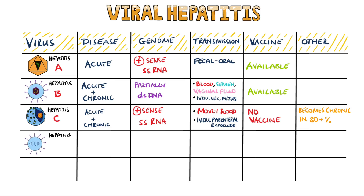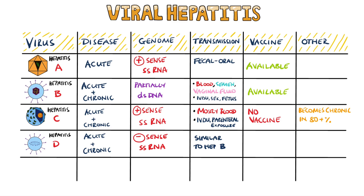Hepatitis D causes an acute disease, but in some instances it can be chronic. It's a negative-sense, single-stranded RNA virus and is transmitted very similarly to hepatitis B, most commonly via intravenous drug use in the developed world.